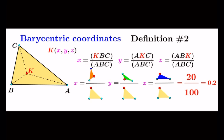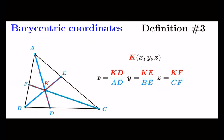The area-based definition with a simple transformation leads to the third definition, the length-based one, which is described in the following figure. Using this definition, we can give the geometric interpretation of the barycentric coordinates.